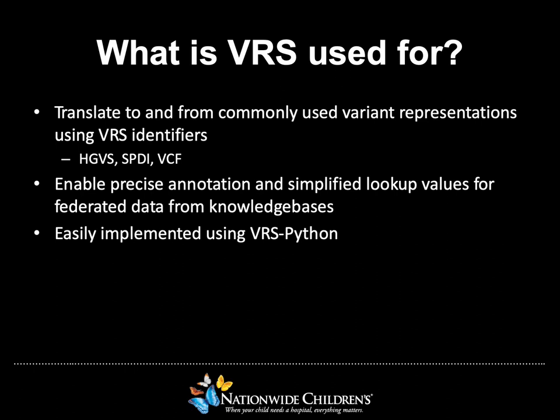So you may be wondering, why is VRS important? Why should you care about it? What's it used for? Well, with VRS, you can translate to and from commonly used variant representations using VRS identifiers. The currently supported variant representations are HGVS, SPDI, and VCF. Using VRS identifiers also allows precise annotation and simplified lookup values for federated data from knowledge bases. You can take advantage of these features by implementing our open-source Python package, called VRS Python, in your applications.